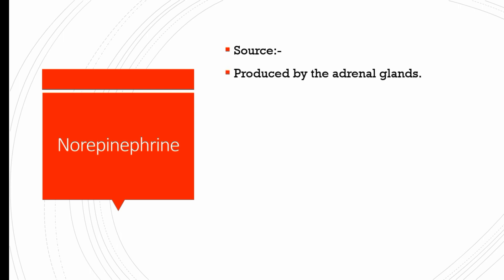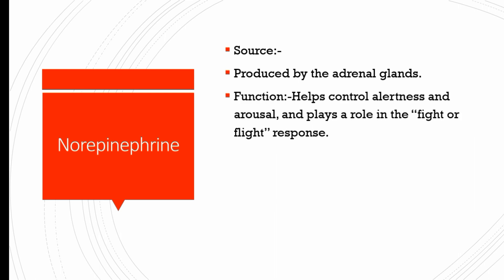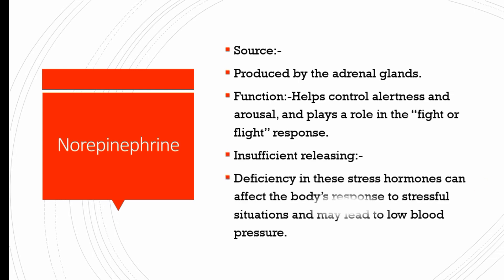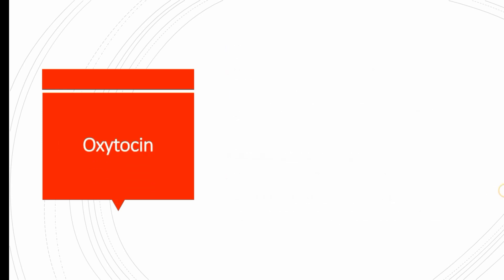Norepinephrine is produced by the adrenal glands. It helps to control alertness and arousal and plays a role in the fight-or-flight response. A deficiency of these stress hormones can affect the body's response to stressful situations and may lead to low blood pressure.